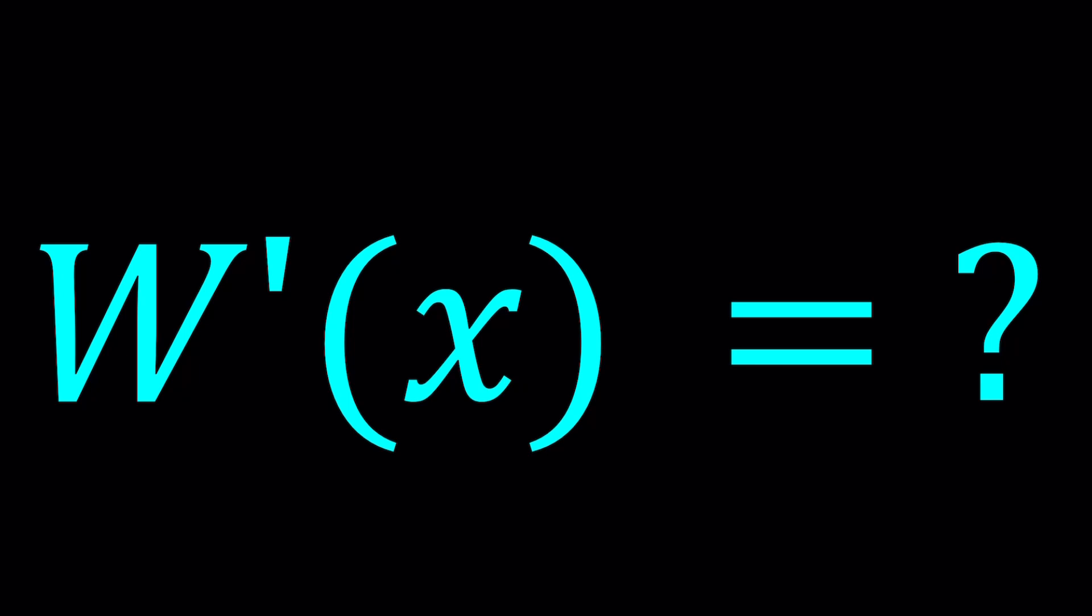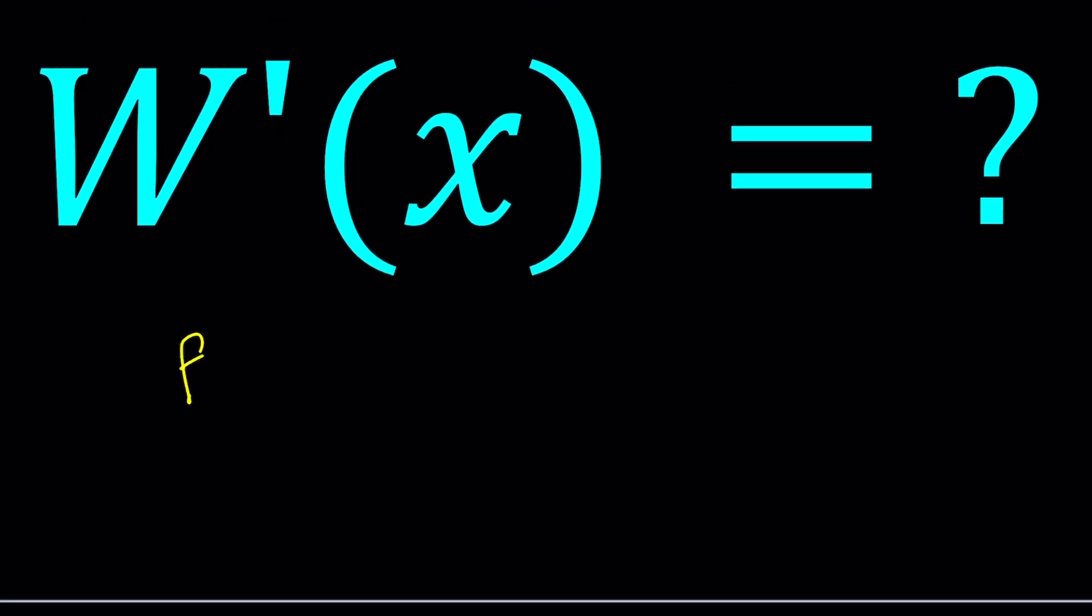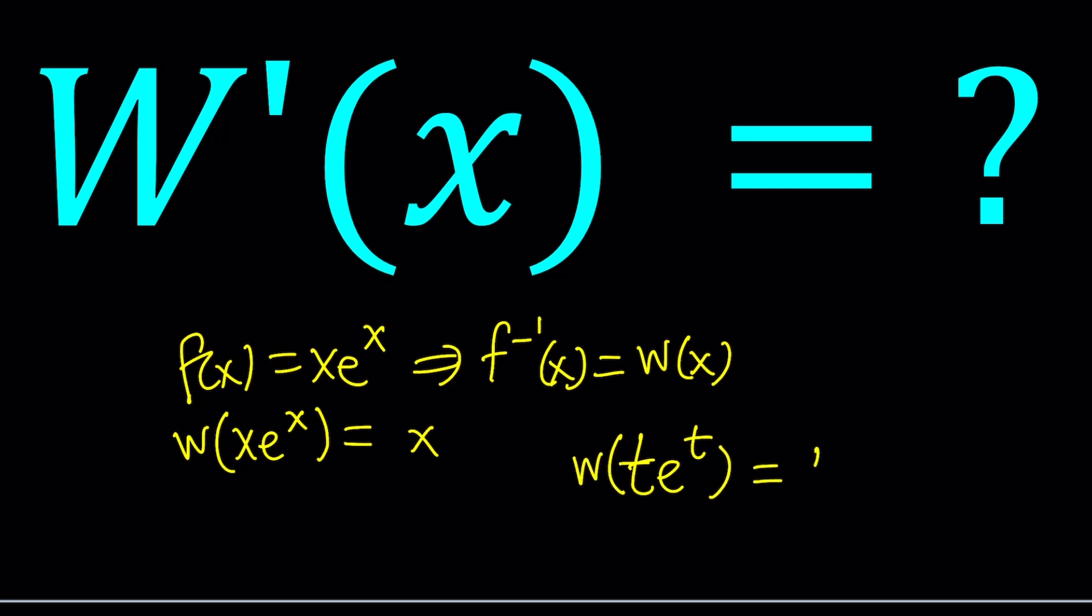So Lambert's W function can be defined in many different ways, one of which is the inverse function for x times e to the power x. So if you have f of x equals x e to the x, then its inverse, of course this is a multi-valued function, by the way you'll see the graph in a little bit, can be defined as Lambert's W function. In other words, Lambert's W function takes x e to the x as input and returns x as an output. So whenever you see something like x times e to the x, or t times e to the t, then when you apply Lambert's W to this, the output is going to be t. Of course, depending on the branch of the Lambert's W function, you get different values. We're talking about real values here, but we're going to differentiate it in the general way. And I'll be presenting two methods.